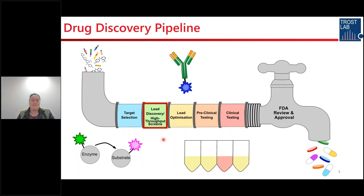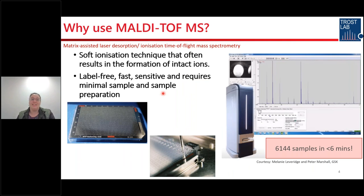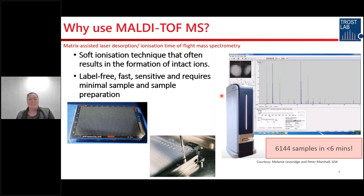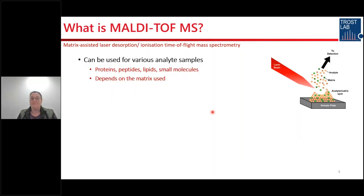This is where my research is focused, because mass spectrometry offers the potential to change this — it offers a label-free, sensitive method. I specifically use MALDI-TOF mass spectrometry, which stands for matrix-assisted laser desorption ionization, time-of-flight mass spectrometry. It is a soft ionization technique that often results in the formation of intact ions rather than ion fragments. It is label-free, fast, and very sensitive, requiring very minimal sample — you can spot 200 nanoliters or 100 nanoliters depending on the plate. It is also very quick, as demonstrated by a high throughput screen running on a MALDI instrument.